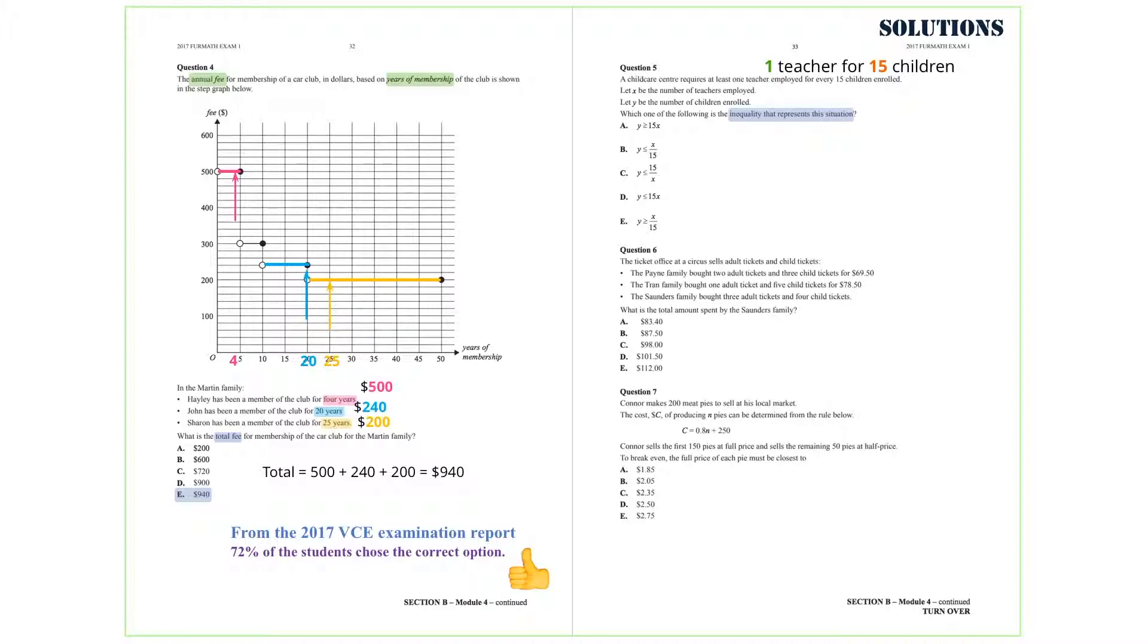Well, if there is one teacher for every 15 children, then Y, which is the number of children, must be less than or equal to 15 times X. So, the answer we are after is Option D.